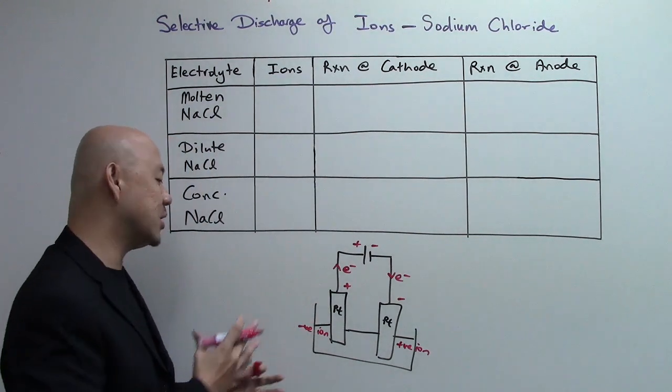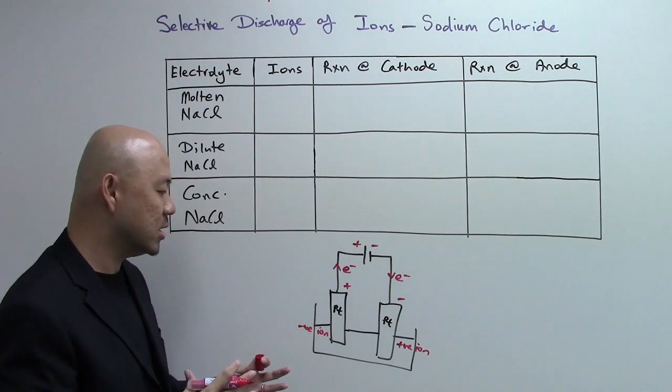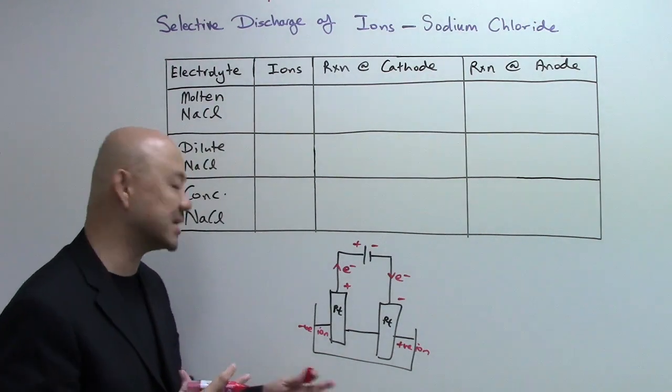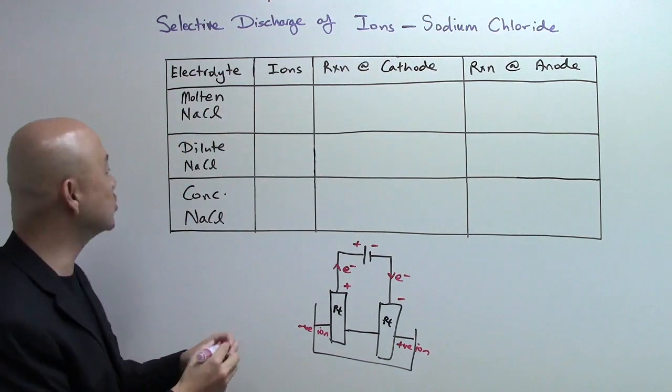So once again, if there's more than one cation, one anion, we then need to decide who will be preferentially or selectively discharged. So the example once again is sodium chloride.